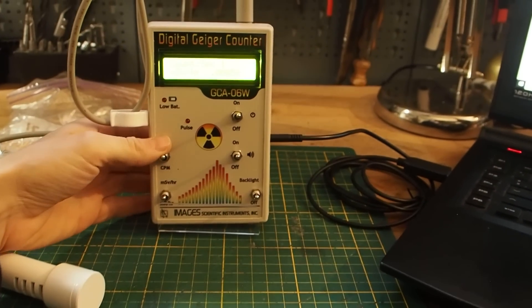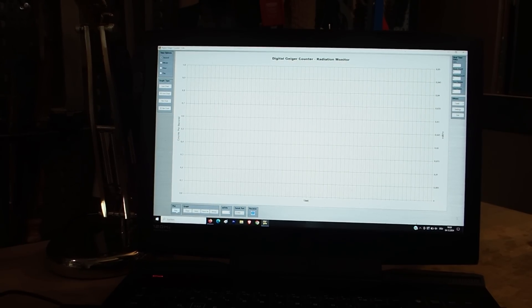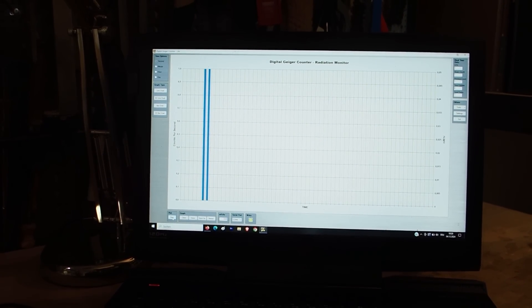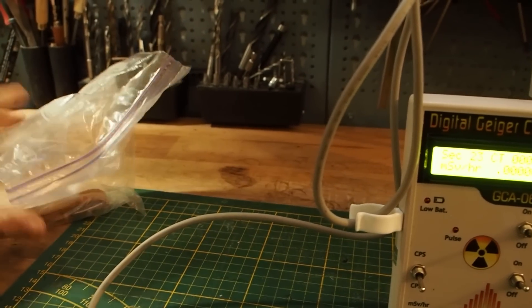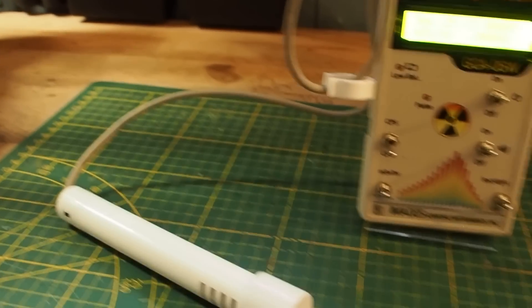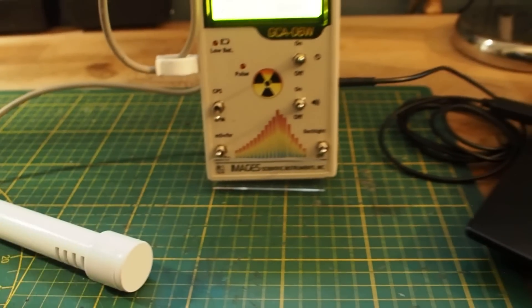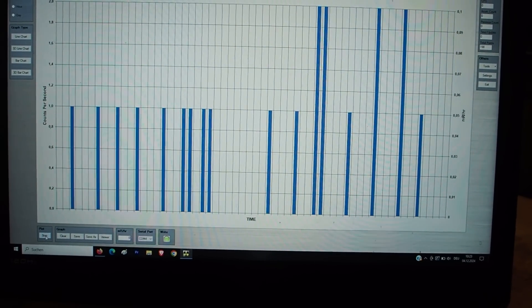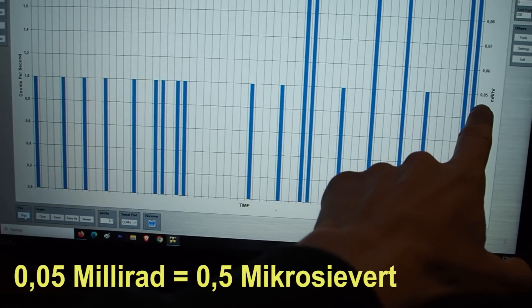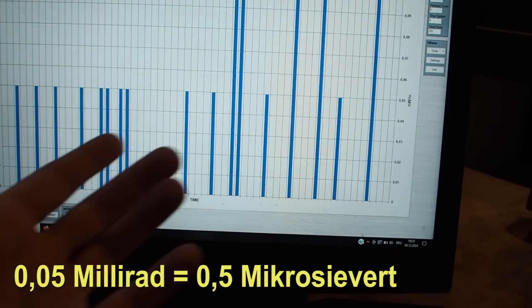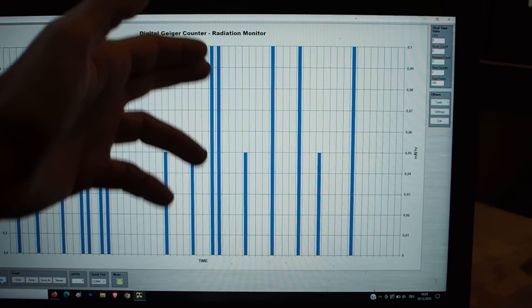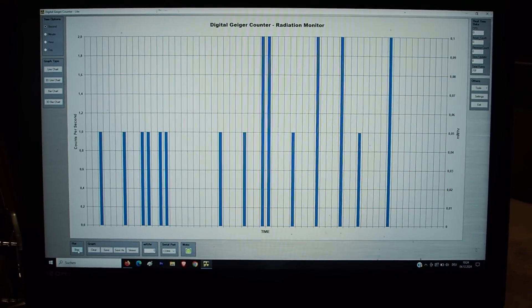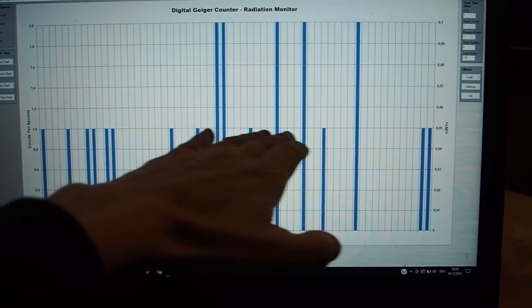Also now I want to do another reading which is background radiation. So now I want to switch to CPM. So now I'm going to wait for a minute and then we know what the background radiation is. Actually I have to remove the watch because it's rather close. Alright so here it's saying that most of the time the background radiation is at 0.05 millirad per hour. Sometimes there are peaks but most of the time it's staying here.